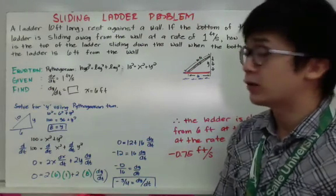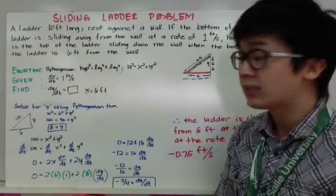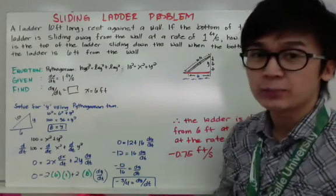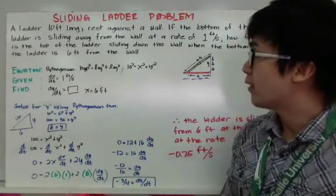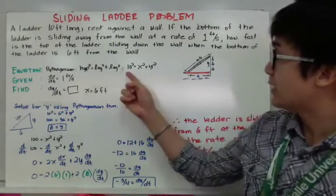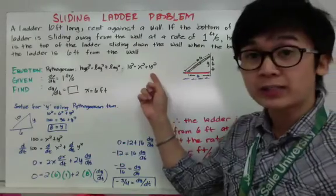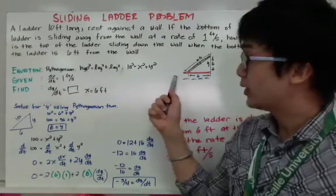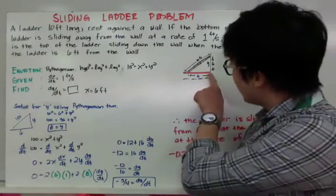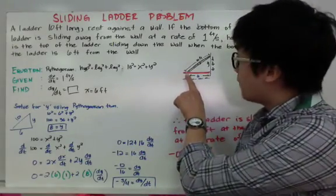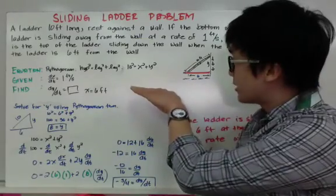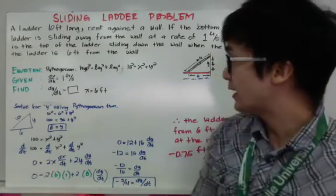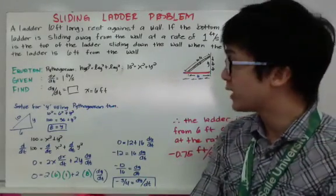The Pythagorean theorem is: hypotenuse squared equals leg squared plus leg squared. All we need to do is use that formula, which is not explicitly given in the problem, and solve our related rates problem. We have 10 squared equals x squared plus y squared based on the given problem. The given rate is the change of x with respect to time — dx/dt — and it's moving away from the wall at the rate of 1 foot per second.